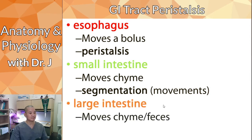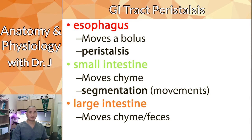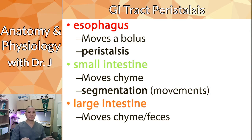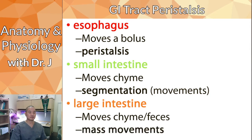The large intestine moves chyme, which eventually becomes feces, as it compresses, dehydrates, and compacts the leftover waste particles along with bacteria. Instead of continuous segmentation-style peristalsis, it's not always active — once it has something, it moves it completely, then kind of stops and goes again.